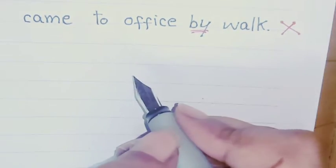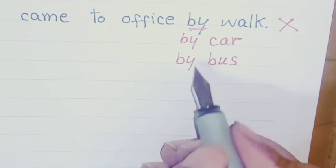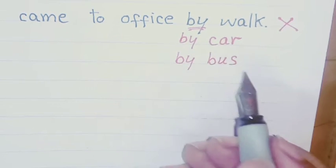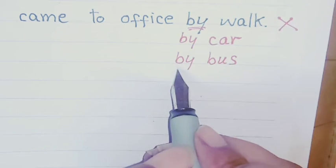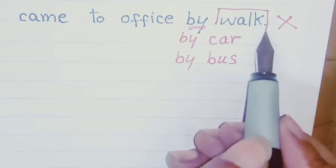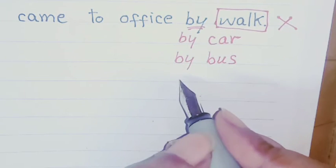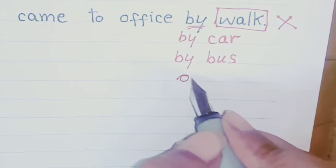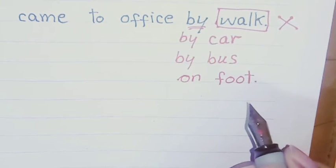By is used to show the use of transport means. You can say by a car, by a bus. By is used for means of transport. But when you came on foot then you didn't use walk as transport, so by walk is incorrect. If you want to show that you came on foot then you have to say: I came to office on foot.